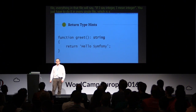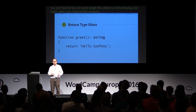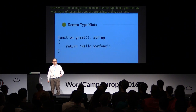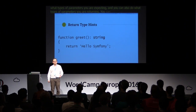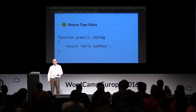Return type hints work just like parameter type hints: just as you can declare what types of parameters you're expecting, you can also declare what type you're returning — a string or an object of a particular type. This works with the strict types declaration and scalar types as well.